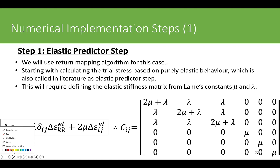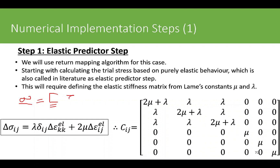Your stress tensor is generally written as the elasticity tensor contracted with epsilon. This tensor has four indices because it's a fourth-order tensor, while stress and strain have two indices as second-order tensors. In numerical implementation, this fourth-order tensor is stored as a six-by-six matrix, and that is the form we will use.